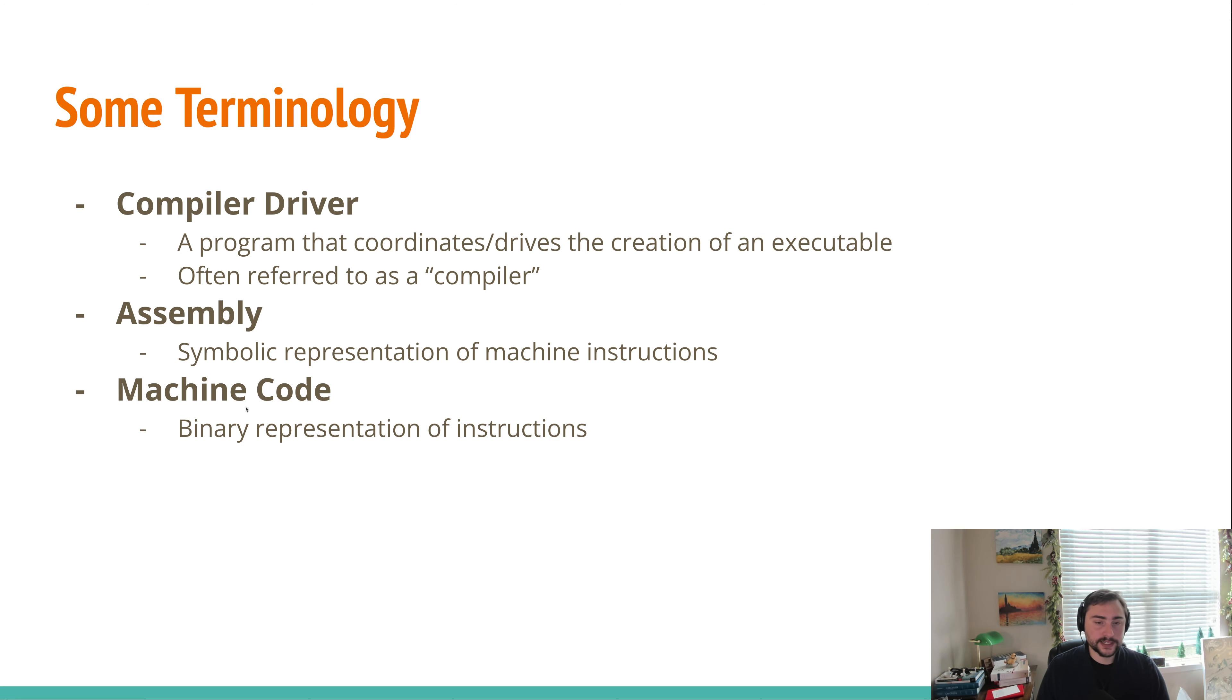Now below our assembly is going to be this machine code, and this is the binary representation of our instructions. So eventually, during this process of generating our executables, our assembly, this symbolic representation of our instructions, gets translated into something that the processor can actually understand, which is this binary form, just ones and zeros, the encodings of these instructions. So that's what machine code is. It's just this binary encoding of our assembly instructions.